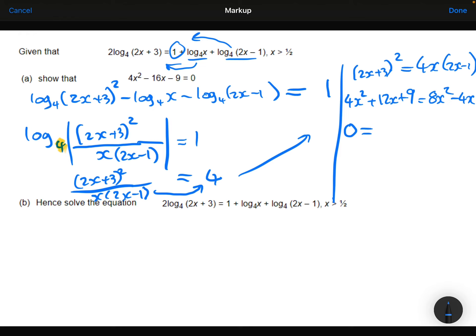Subtract 4x squared from both sides, subtract 12x from both sides, and subtract the 9 from both sides. And this was what we needed to show.